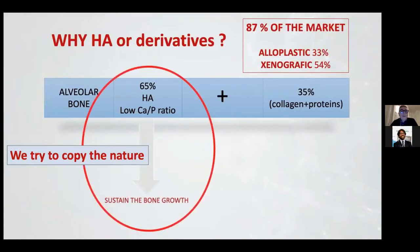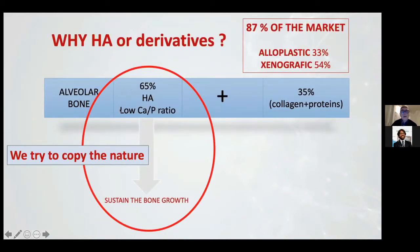Why do we use this material? We use it because we try to copy the natural. The alveolar bone is made from 65% of HA and 35% collagen and proteins. So the 87% of the market is made from a copy of the natural, and we try to copy using HA.